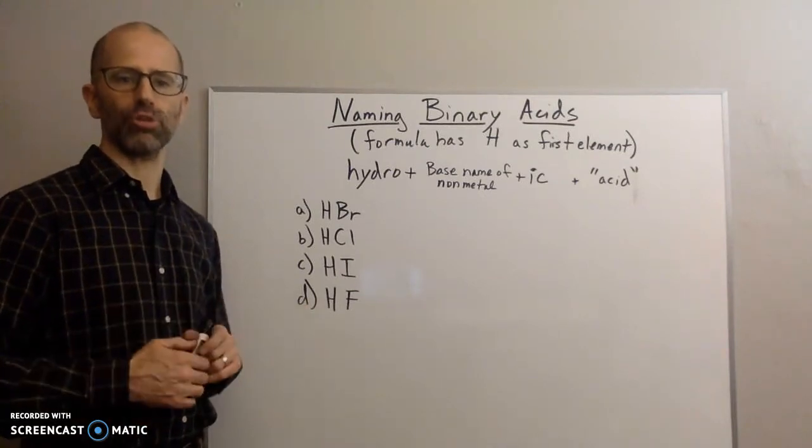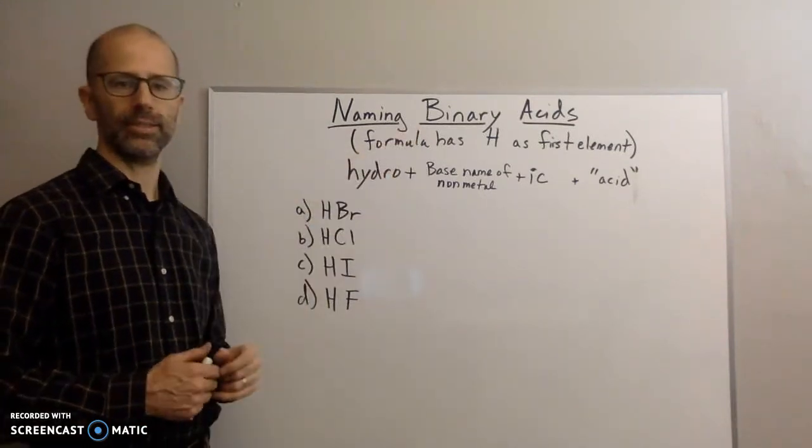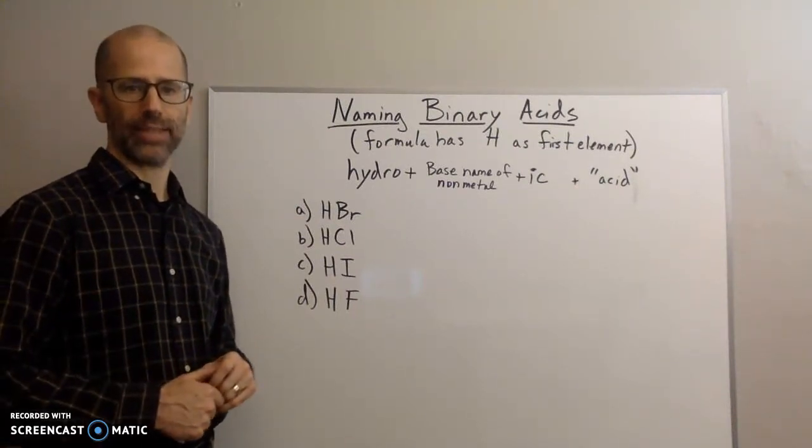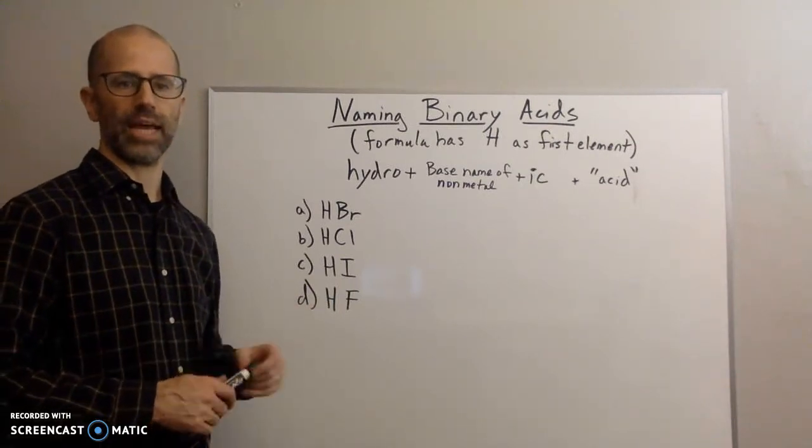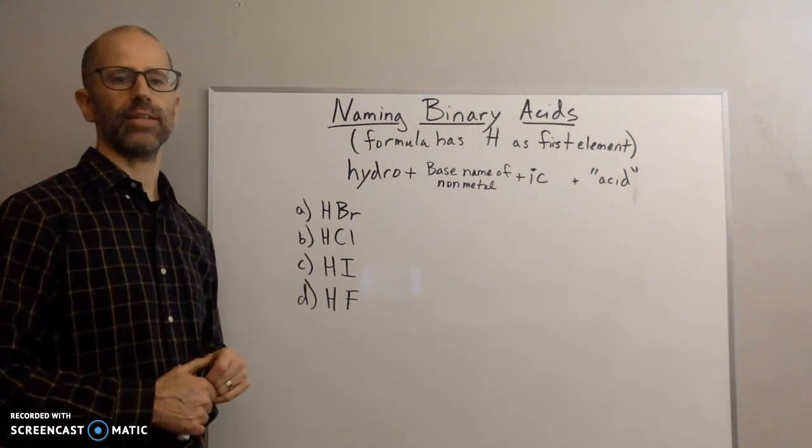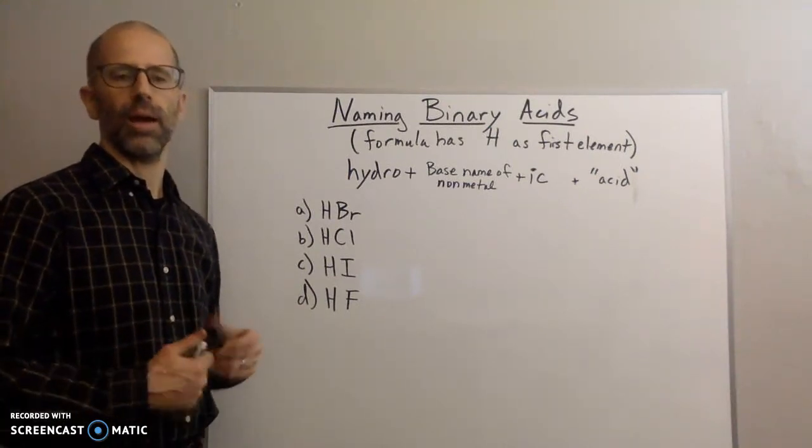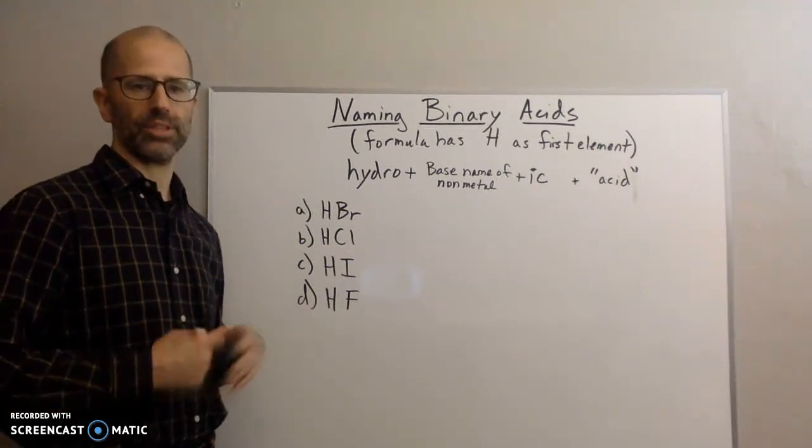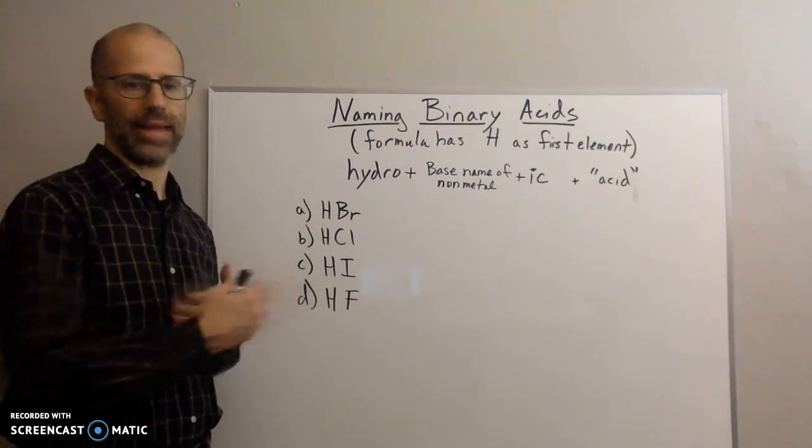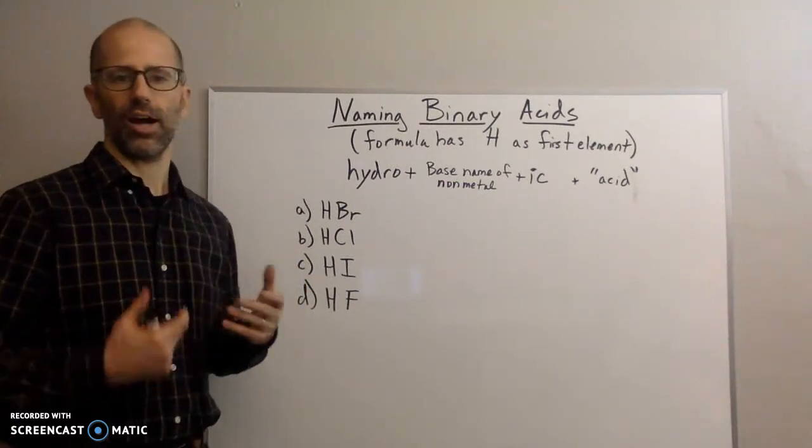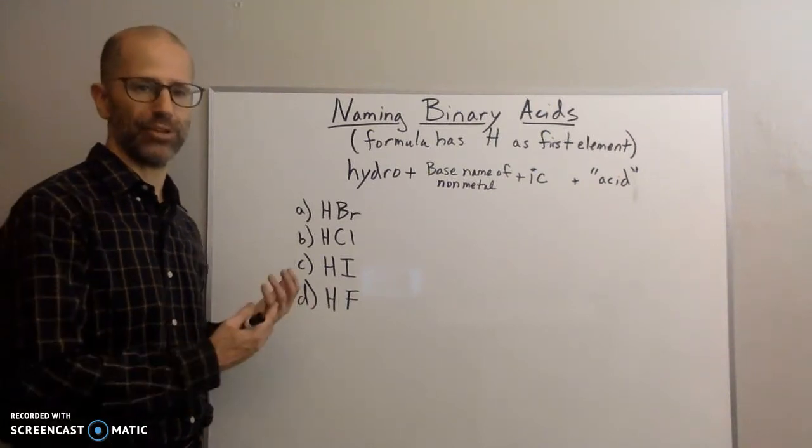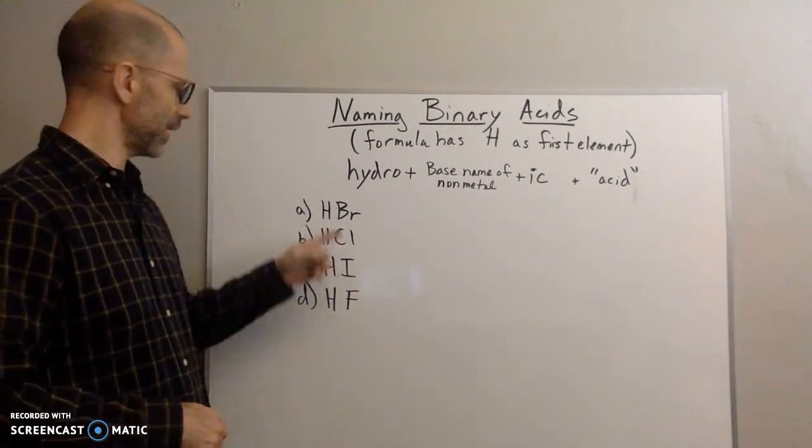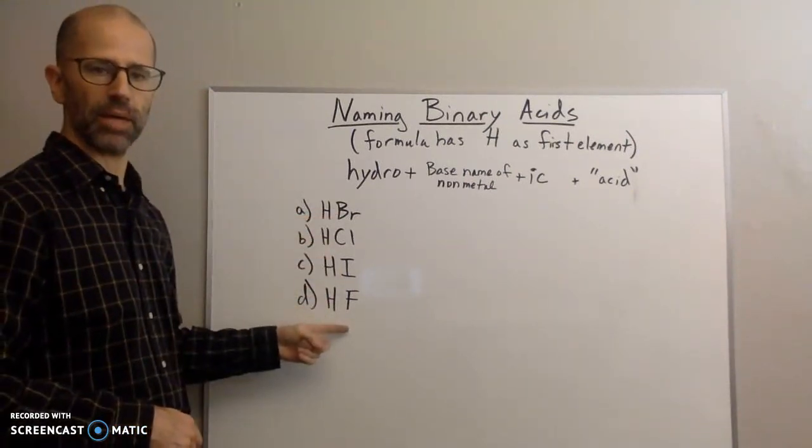And there are going to be two basic groups of acids: binary acids and oxy acids. In the next video, I'll go over oxy acids. So in this video, I'm just going to deal with how to name the binary acids. If you remember from the binary ionic substances, binary means you have two elements. So binary acids are just two elements, and one of those elements is hydrogen. The first element is hydrogen, and then the second element is some other non-metal.